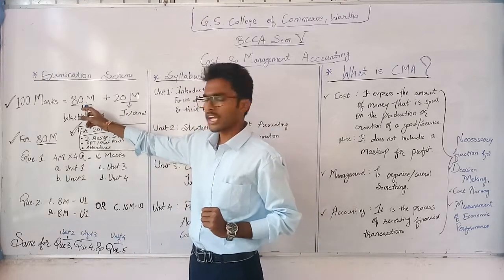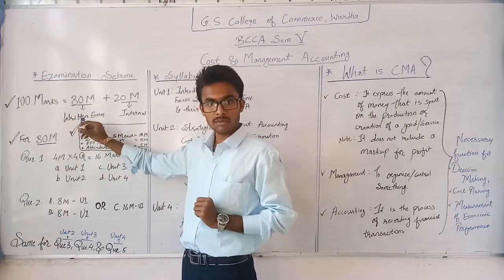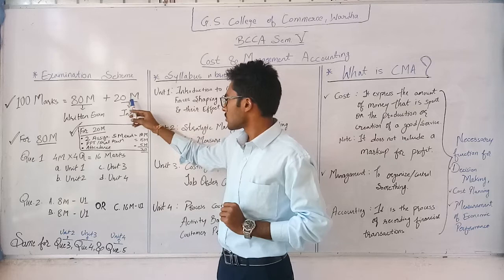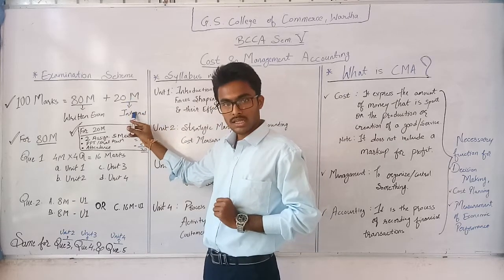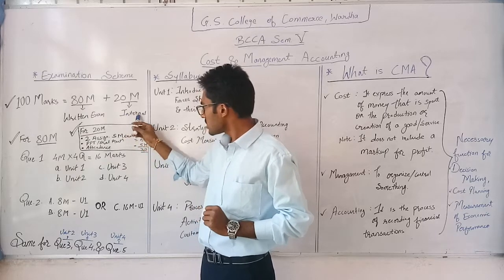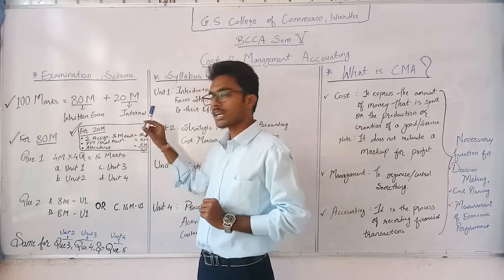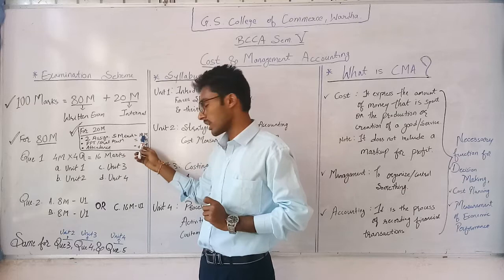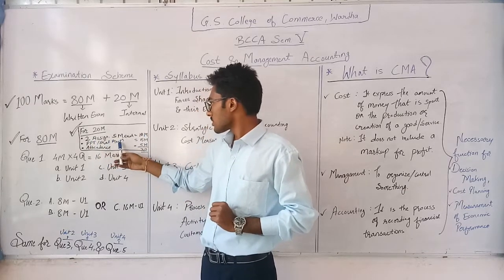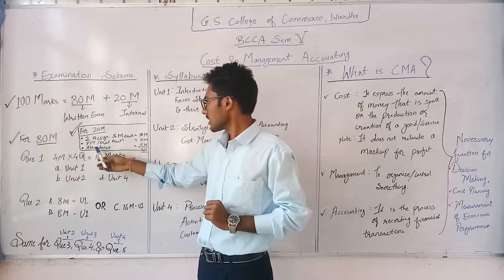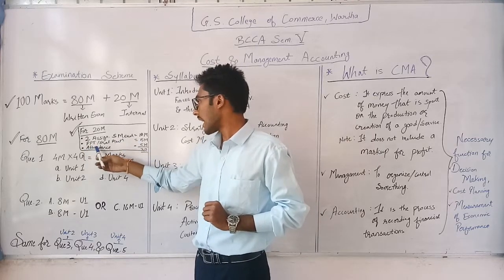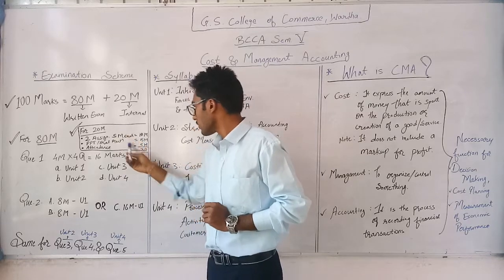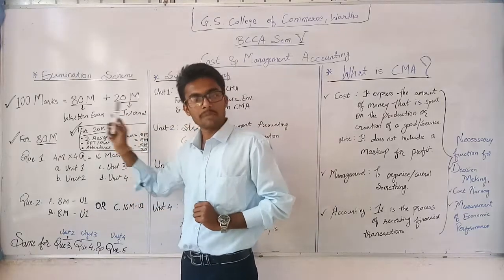This is all about the 80 marks question paper, which you will gain from the written examination conducted by RTB. For the 20 marks internal assessment: 2 assignments for 5 marks each, making 10 marks; a PPT or oral presentation for 5 marks; and attendance — 75% attendance will provide you 5 marks. This all makes your 20 marks, and this completes the examination scheme.